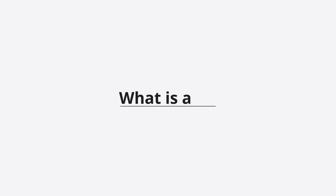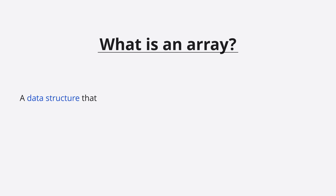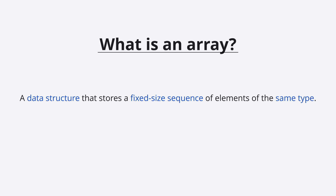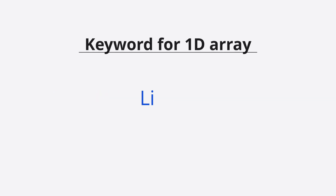First of all, what is an array? An array is a data structure that stores a fixed-size sequence of elements of the same type. A 1D array is a linear collection of elements that can be accessed directly using an index. So the keyword here will be 'linear' for 1D array.